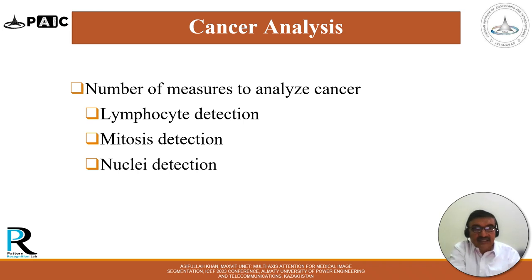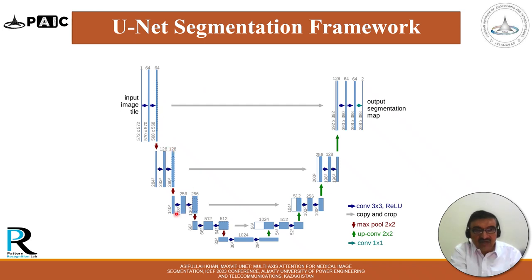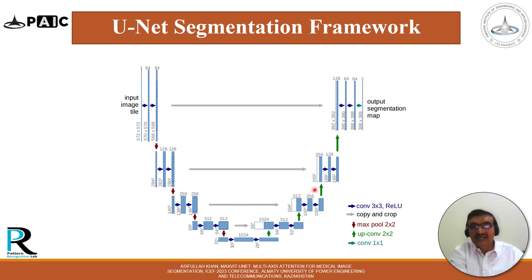Cancer analysis is performed in a number of ways, including lymphocyte detection, mitosis and cell division detection and analysis, and nuclei detection — which is the focus of this work. For segmentation, the UNet framework is very popular, specifically for semantic image segmentation. It is in the form of an autoencoder: an encoder compresses the input, a bottleneck layer holds information-rich features, and then a decoder upsamples or decompresses to segment the overall objects in the images.